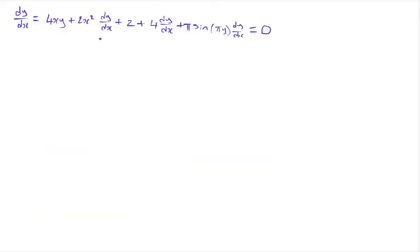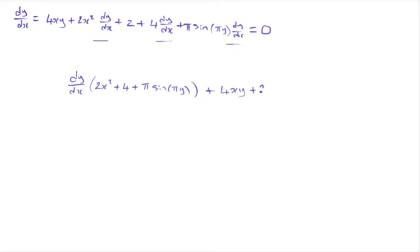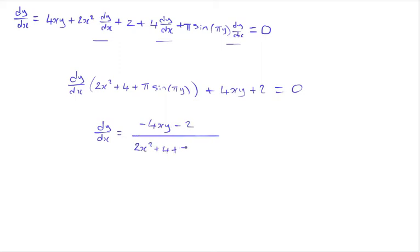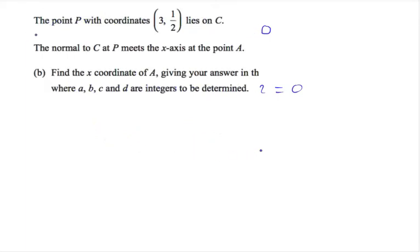We can see that there are three terms which have dy/dx, so we can factor out the dy/dx. In the bracket we will have 2x² + 4 + π·sin(πy), plus 4xy + 2 equals zero. Moving the non-dy/dx terms to the other side and dividing by the bracket gives: dy/dx = (−4xy − 2) / (2x² + 4 + π·sin(πy)).